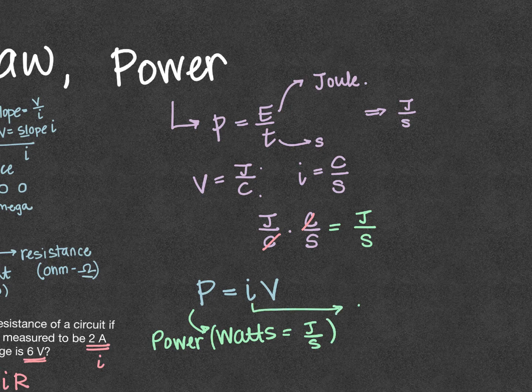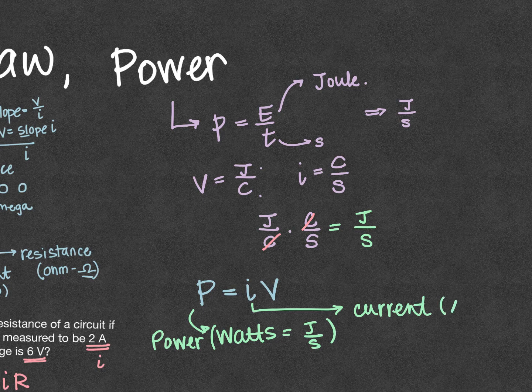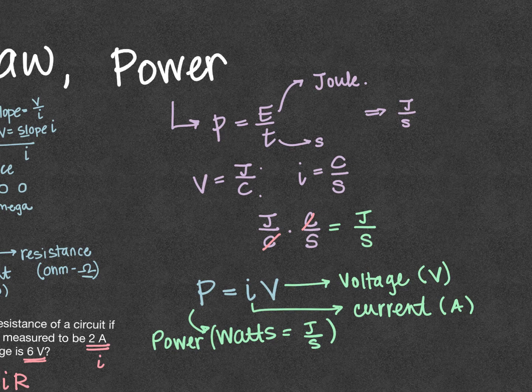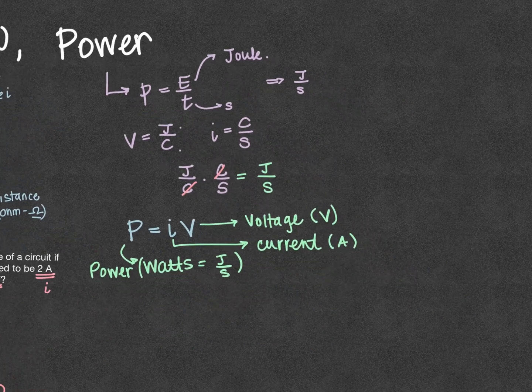This I is our current, and current is still measured in amps. And this V is our voltage, also known as potential difference, and it's measured in V for volts.